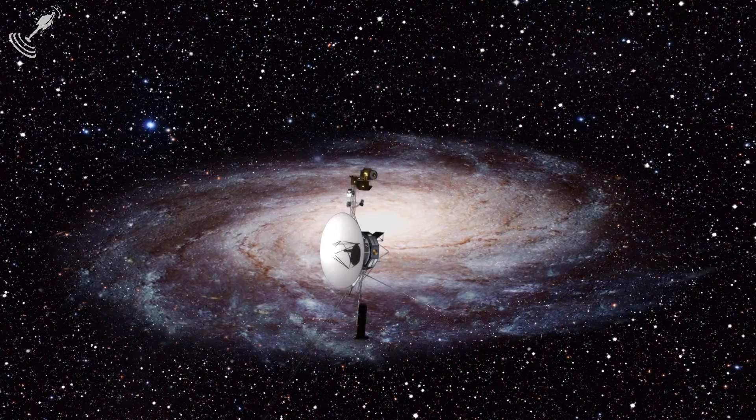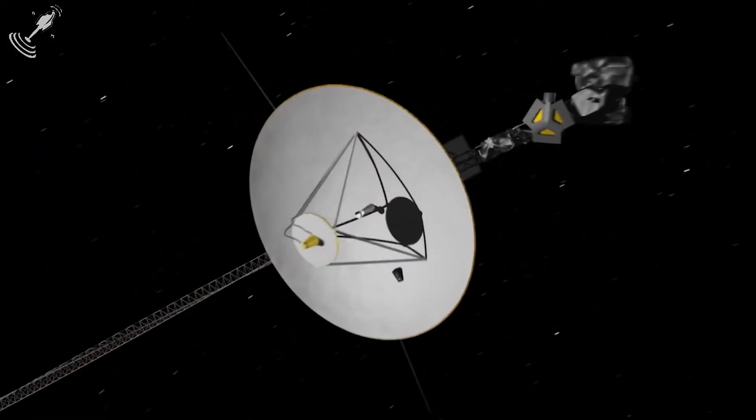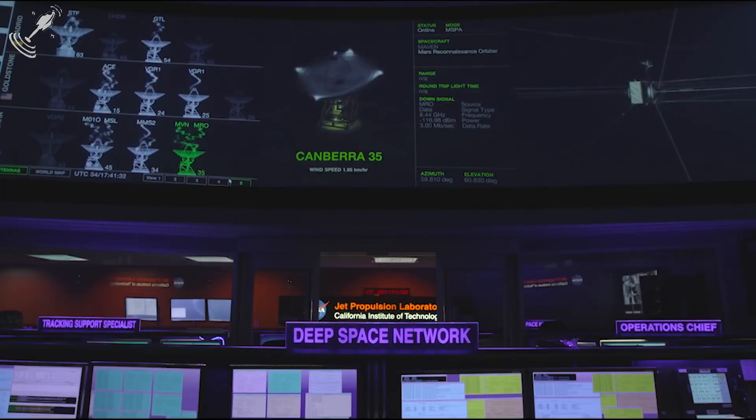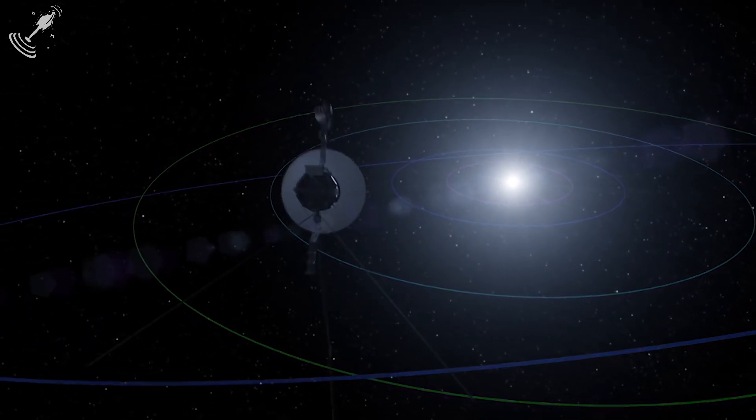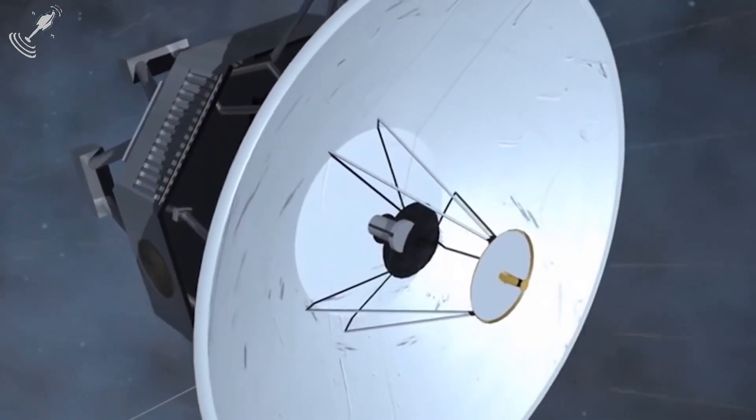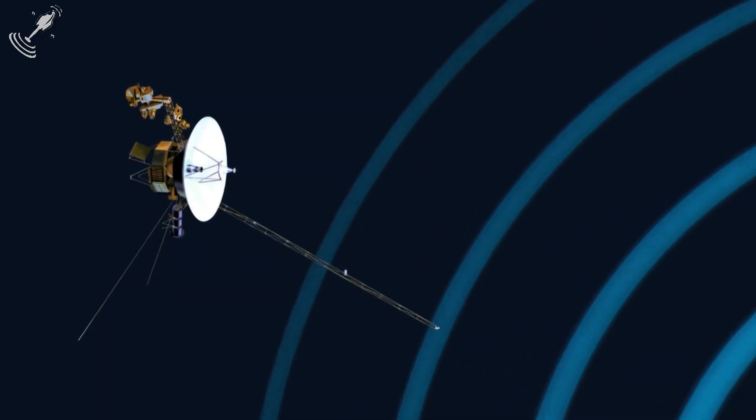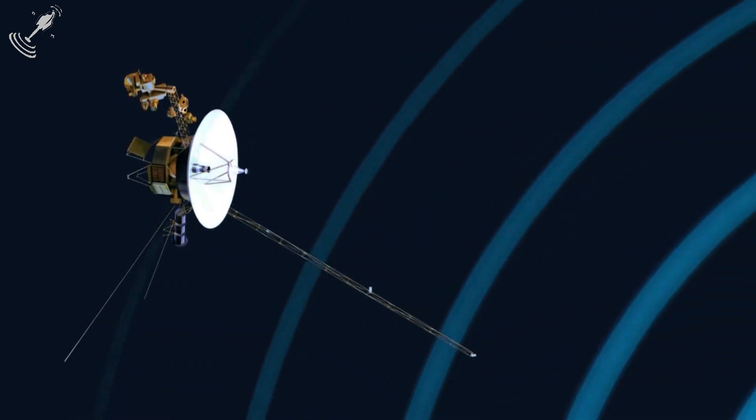But yes, one thing is very certain. 45 years after its launch, the Voyager 1 probe is presenting a strange problem that has puzzled the members of the NASA mission. The spacecraft, despite all its time in operation, operates in good shape 23 billion kilometers away from the planet. However, the data that its system delivers to Earth does not reflect or match the probe's operations.